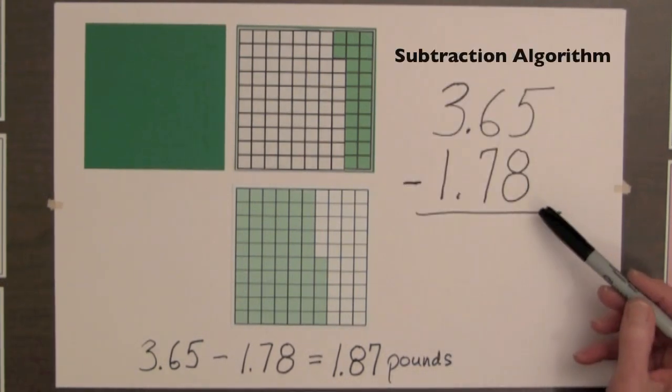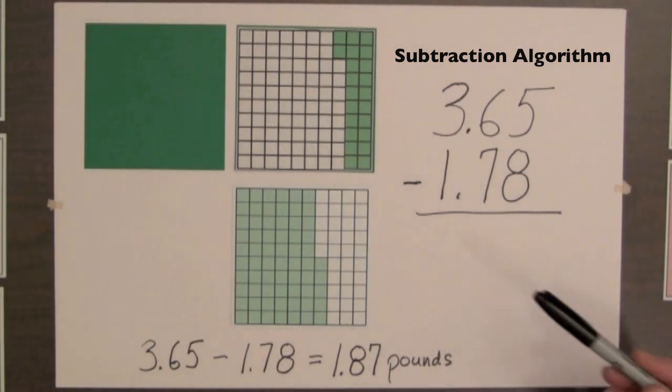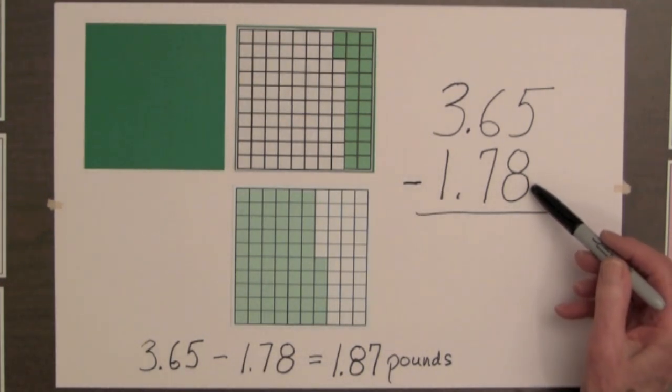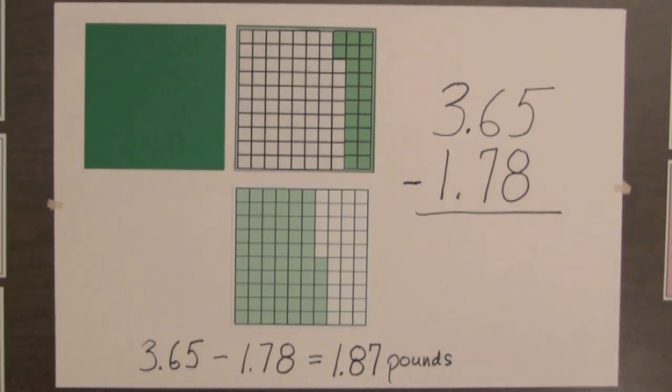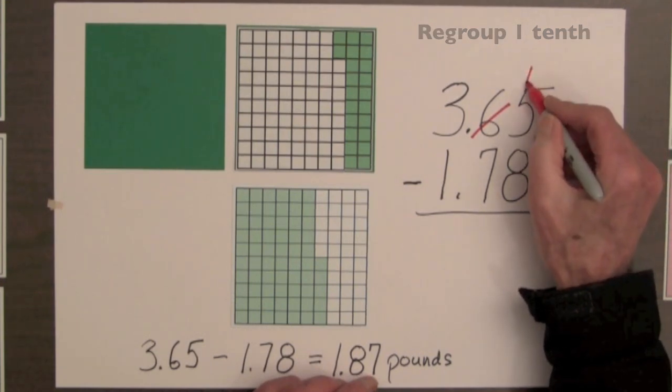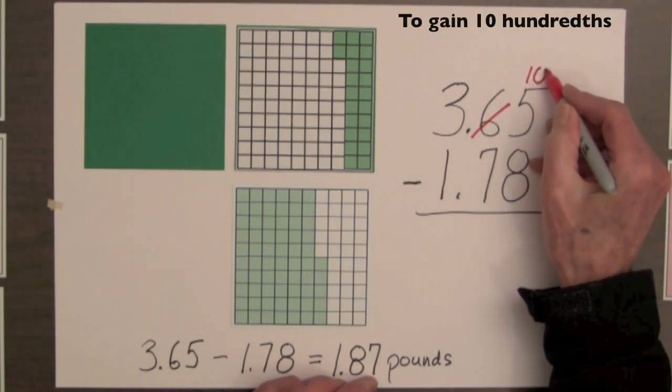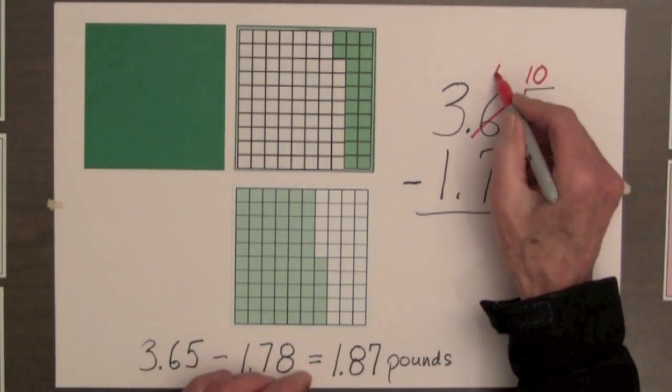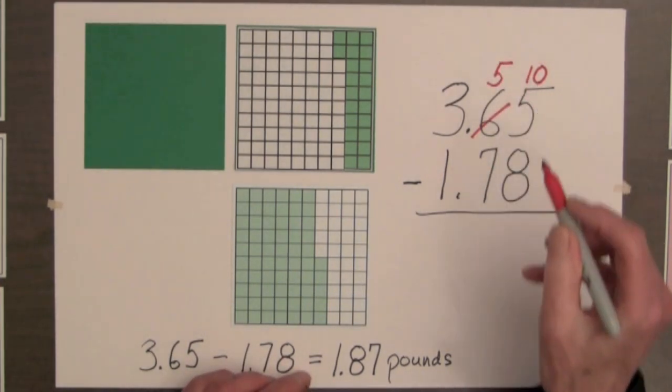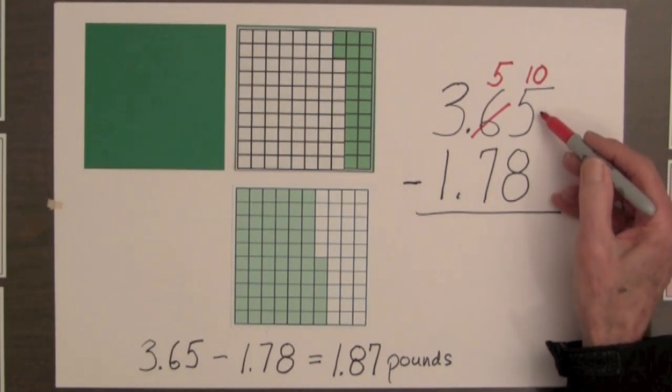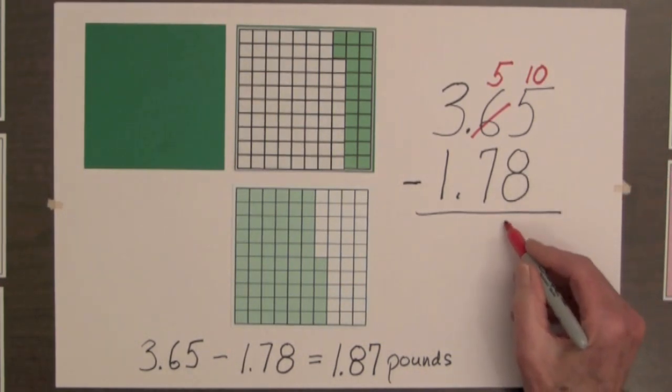The algorithm for computing this difference is similar to the steps for the decimal squares. We want to subtract 8 hundredths, but we only have 5 hundredths. So we regroup 1 tenth to gain 10 more hundredths. And this leaves us with 5 tenths in the tenths column. 10 and 5 is 15, and 15 minus 8 hundredths is 7 hundredths.